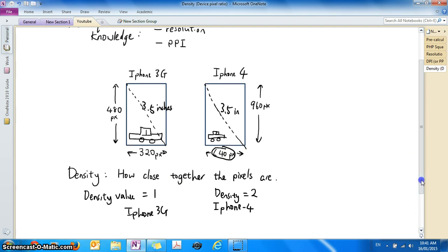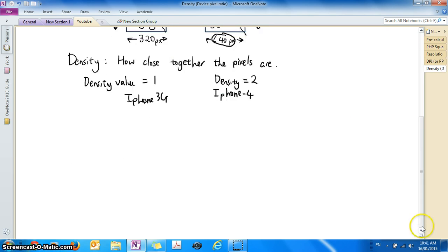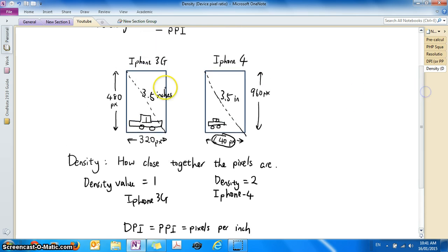Alright, iPhone 4 will have a density value of 2 because the pixels are twice as close together. Okay, so bringing this concept back to relate it to DPI's. Okay, if you guys remember DPI is another word for PPI which is pixels per inch.